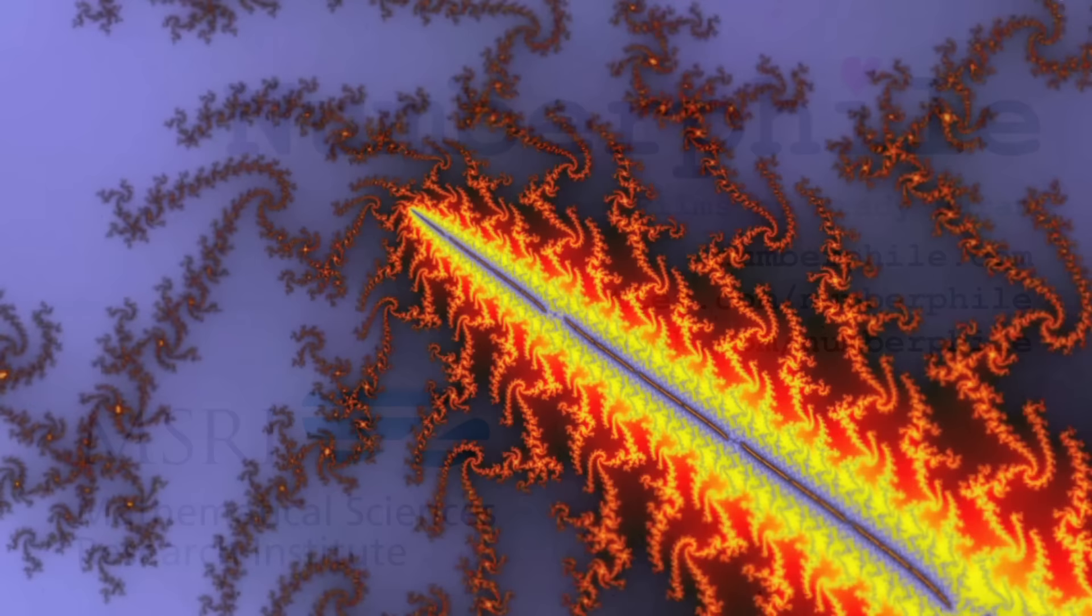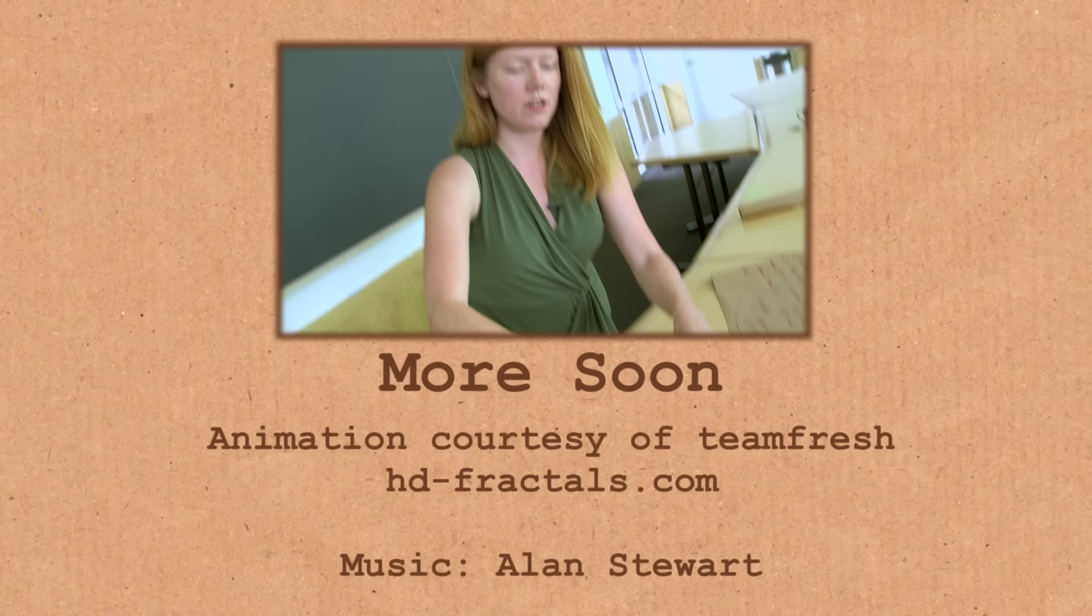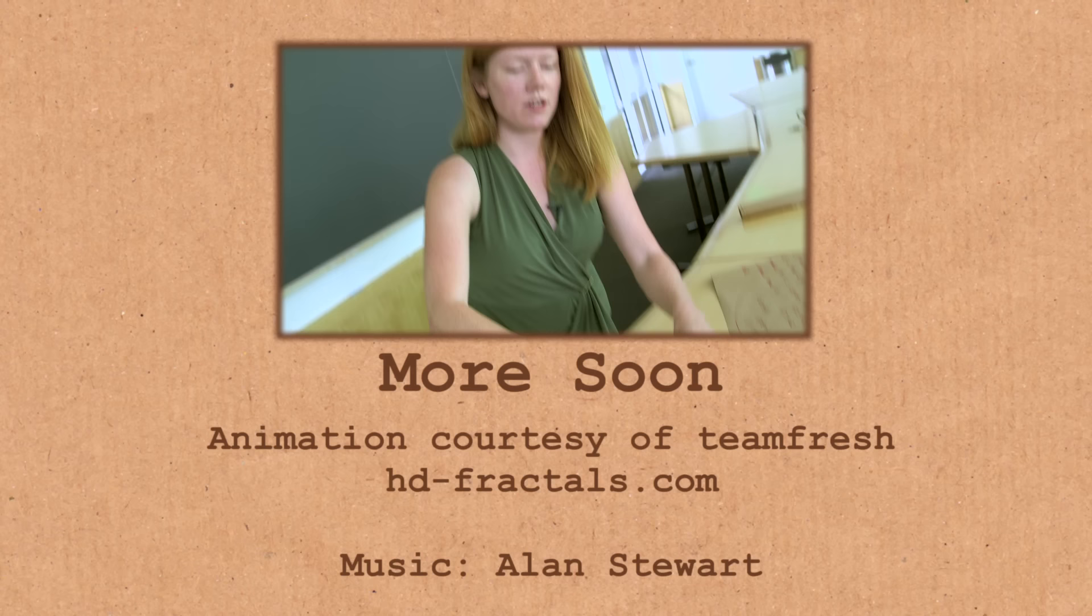It turns out that another way you could define the Mandelbrot set is by which of these two behaviors you get when you draw the filled Julia set for z squared plus C. Do you get kind of one piece, one blob, or do you get a bunch of disconnected pieces? If you get one piece, one blob, you're in the Mandelbrot set.